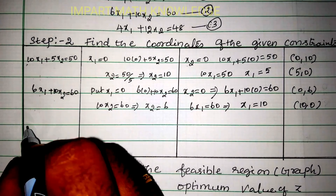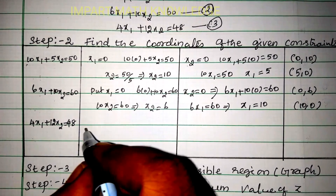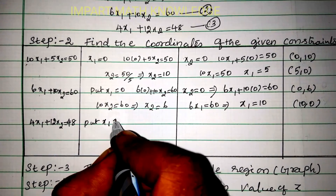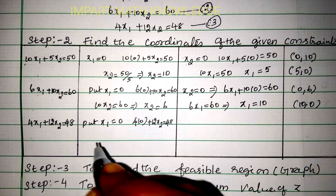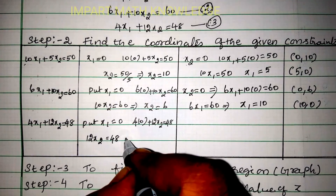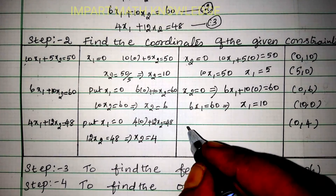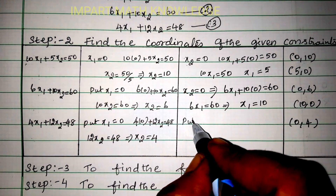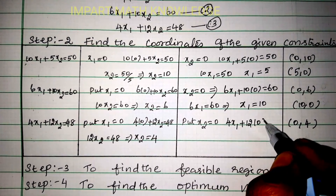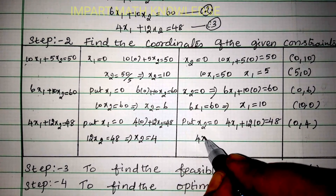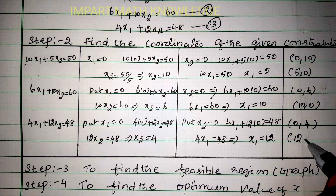For the third constraint 4x1 + 12x2 = 48: putting x1 = 0 gives 12x2 = 48, so x2 = 4, giving coordinate (0, 4). Putting x2 = 0 gives 4x1 = 48, so x1 = 12, giving coordinate (12, 0).